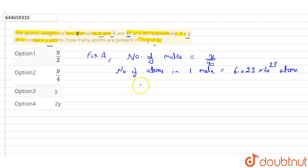So for number of atoms of moles, the number of atoms for moles of A equals x by 40 times Avogadro's number, 6.023 times 10 to the power 23.